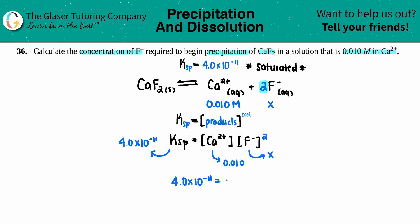4.0 times 10 to the negative 11th equals 0.010 times x squared.